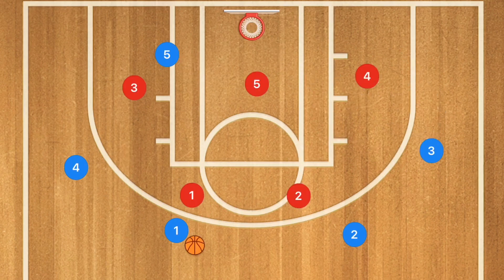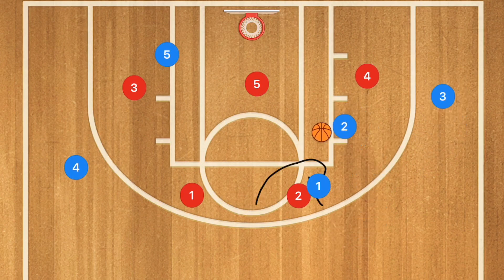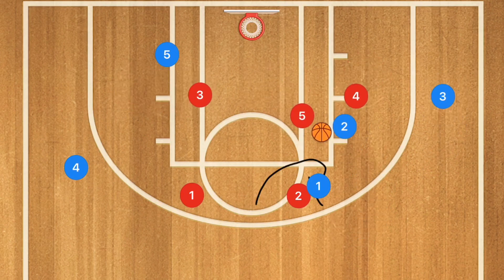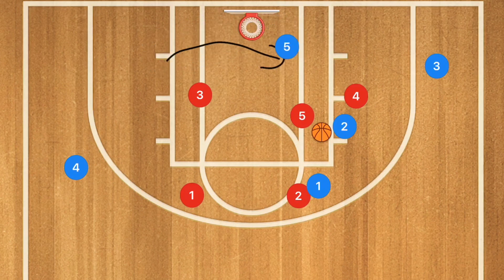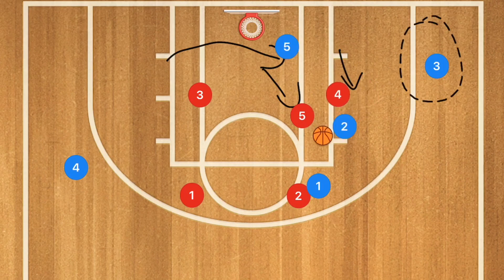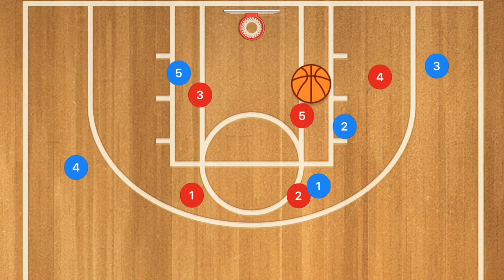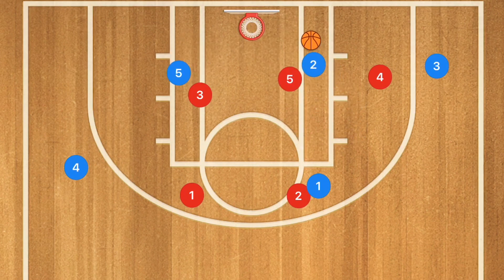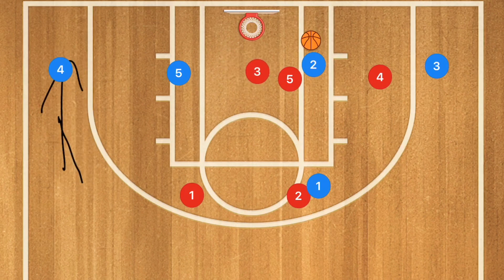Another way to beat a zone defense is by driving and collapsing the defense around you. For example, player one passes to player two, then player one sets a curl screen on player two. Player two uses that screen to collapse the two defenders, which may leave player three open along the wing or cutting baseline, or player five cutting across the baseline. Because player five and player four have moved up, we now have possibilities of player five being open underneath the rim or player three being open.